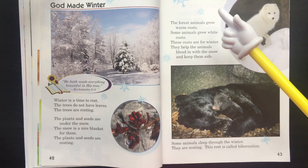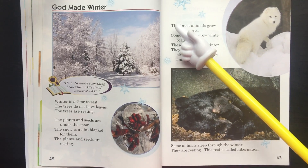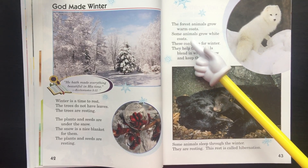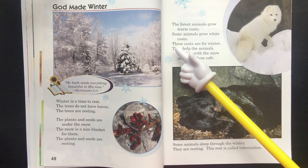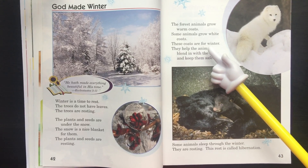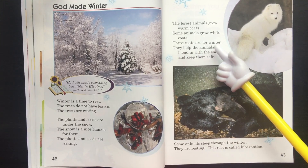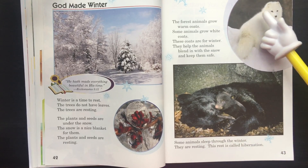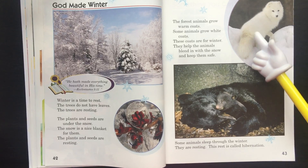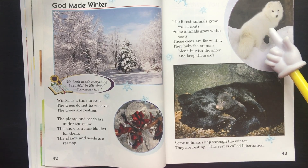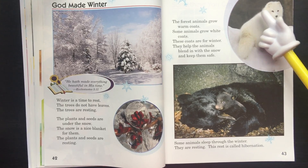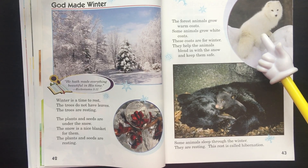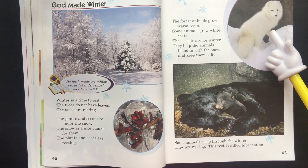Let's move to page 43. The forest animals grow warm coats. Some animals grow white coats. These coats are for winter — they help the animals blend in with the snow and keep them safe. Look at this animal: its fur is white, just like the snow. It helps to keep the animals safe from anything that may try to harm them, because they will blend in with the snow and nothing will see them.